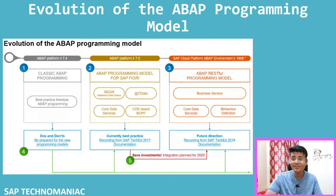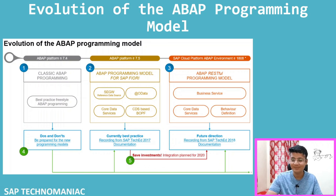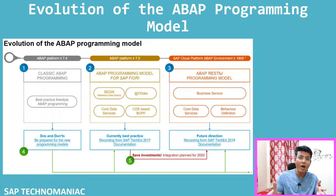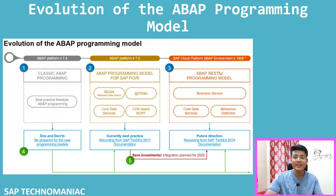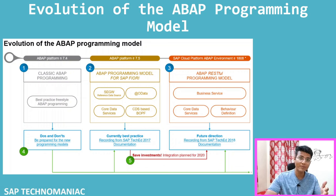You might have seen this picture, if you consume a lot of SAP-related content online from blogs, videos, or any other place. In this picture, we are seeing how ABAP evolved throughout the last decade. Initially we were working on ABAP 7.5, 7.4 or below, then 7.5 came, then ABAP on HANA came, where we worked in different versions.